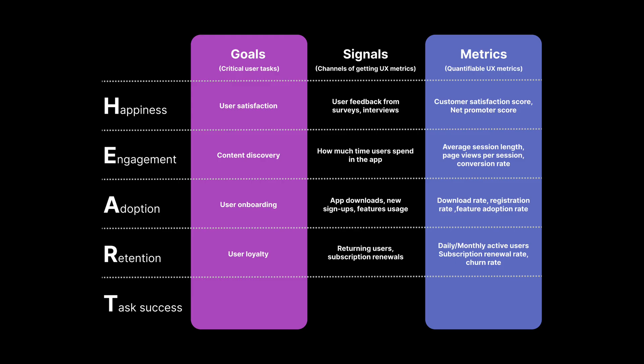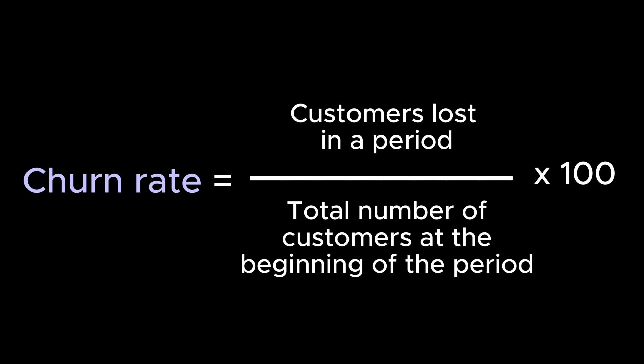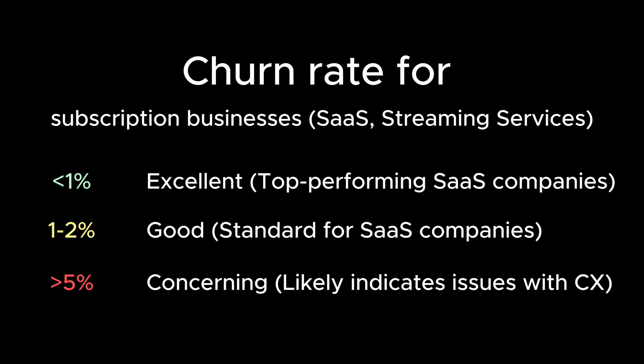Retention measures the ability of your product to retain users over time. Goal: increase user loyalty and keep users returning to the app. Signals: users stay active, renew subscriptions, and make repeat purchases. Metrics: Churn Rate, loss of users, and Subscription Renewal Rate. Churn Rate is calculated by dividing the number of customers lost during the period by the number of customers at the beginning of the period. For SaaS, a monthly churn rate under 1% means excellent performance, 1–2% is good, and above 5% likely indicates issues with product fit or customer experience.